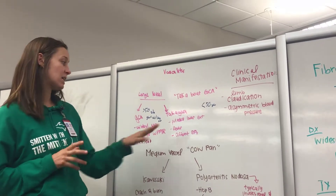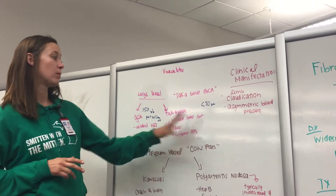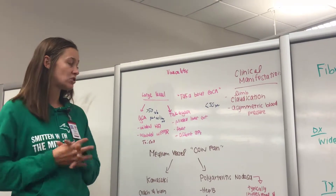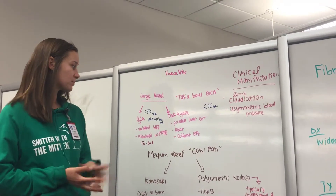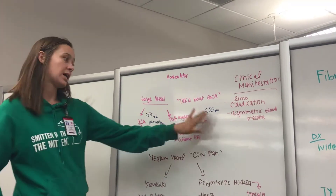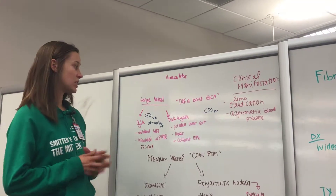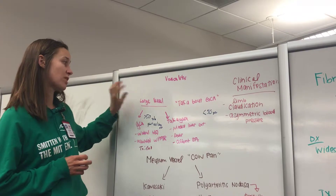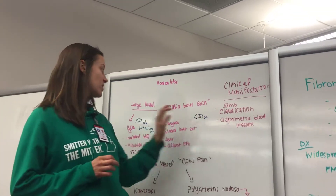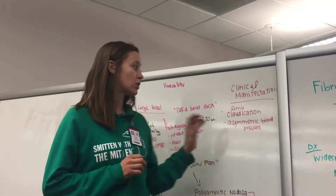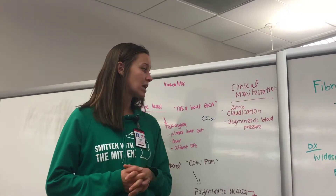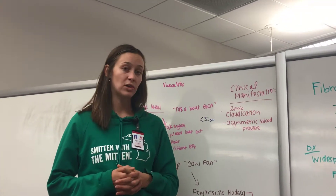Moving on to Takayasu — this is a large vessel vasculitis associated with absent pulses in the lower extremities, fever, and different blood pressures on each side of the body. GCA occurs in patients greater than 50 — remember 'GCA grandma' — and Takayasu is less than 50. In general, large vessel vasculitis features include limb claudication and asymmetric blood pressures.